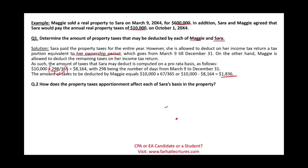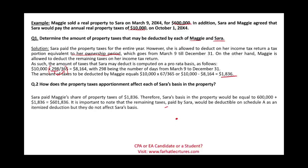How does the property tax apportionment affect Sarah's basis in the property? Sarah paid Maggie's property taxes of $1,836. Therefore, Sarah's basis in the property will equal $600,000 plus the additional $1,836, giving $601,836. The remaining taxes paid by Sarah are deductible on Schedule A as an itemized deduction; however, the extra $1,836 increased her basis because that portion was paid on Maggie's behalf and is not part of her annual tax expense.